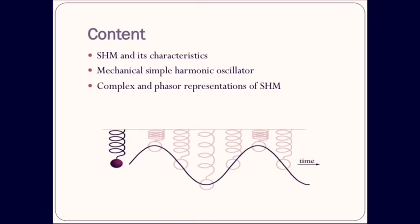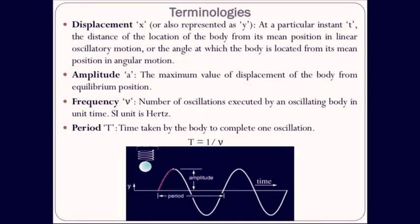Periodic motion can be linear or angular. In this video, we will study more about these types of motions. When a body undergoes linear motion, we normally talk about how fast the body is moving and in which direction. But when the body undergoes oscillatory motion, we have some other aspects coming into picture. Let us learn about these terminologies used in these types of motions.